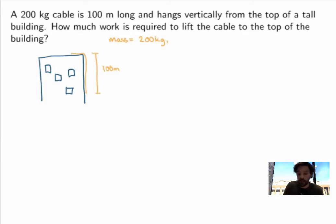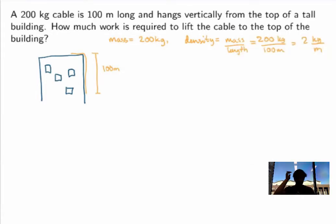So I could also calculate its density, which will be useful later on. So the density here will be the mass over the length of the cable. That's linear density, which in this case will be 200kg over 100m, which is just 2kg per meter. Alright, so that's what I know about the problem.